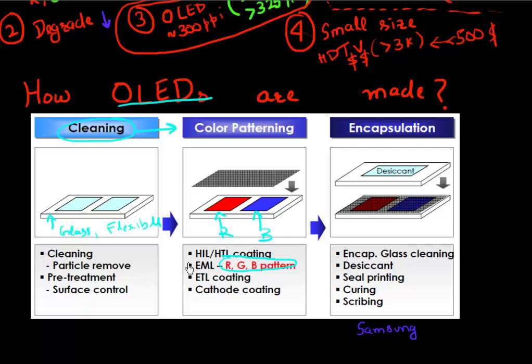The next step is depositing the cathode, electron transport layer, and hole transport layer. Then once all layers are deposited, you encapsulate your display — especially critical for these organic-based LEDs, which degrade very fast if exposed to any moisture or atmosphere. So you seal these displays off using different techniques so they are no longer exposed to atmosphere.